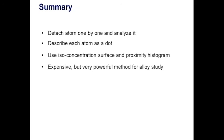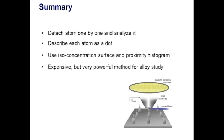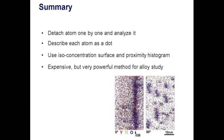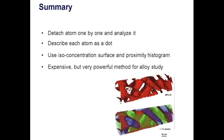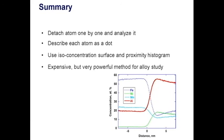As summary, APT is powerful characterization tool by detecting atoms one by one and describe them as dots. For easier detail and quantitative understanding, we can also use ISO concentration surface and proximity histogram. It is expensive and complex, but very powerful for alloy study.